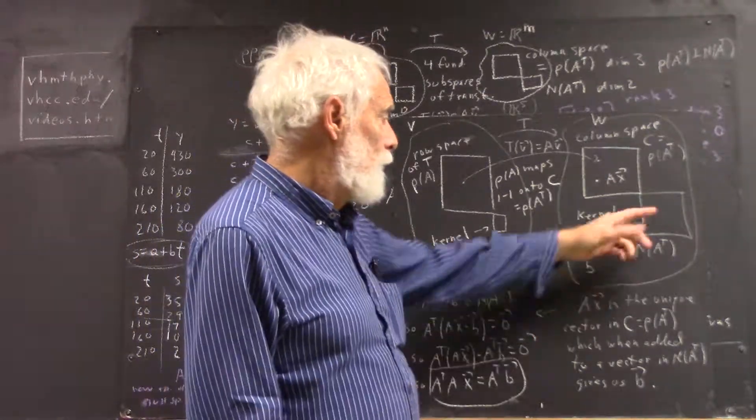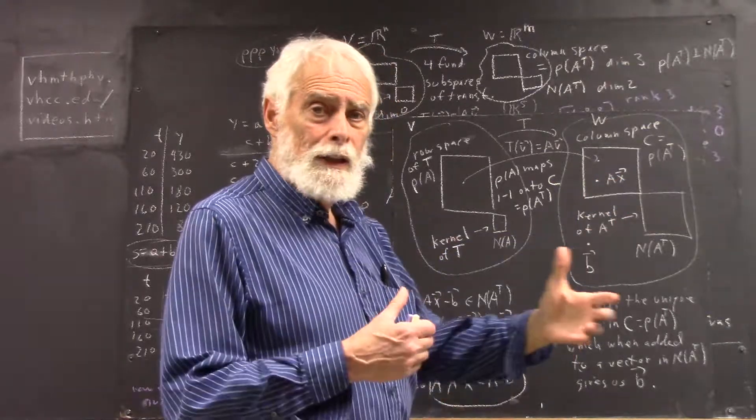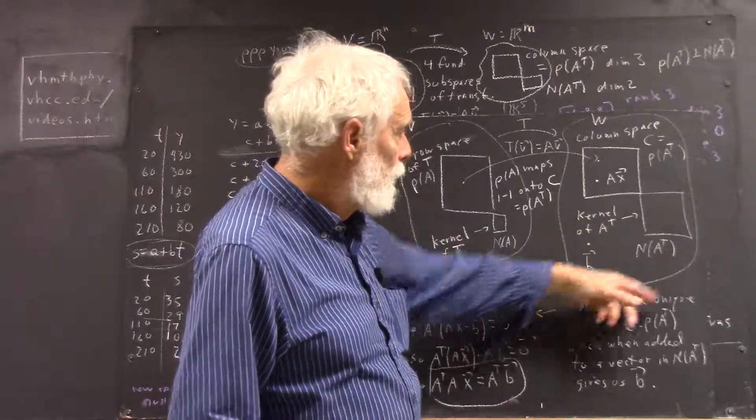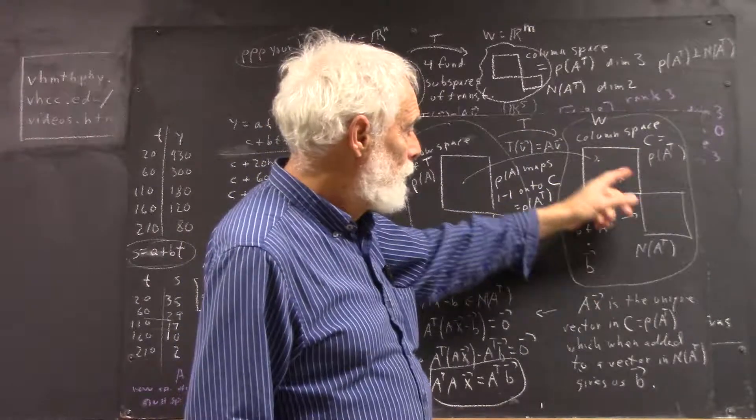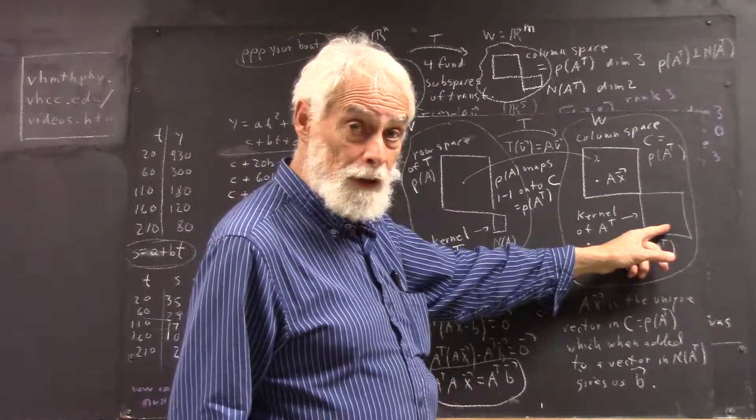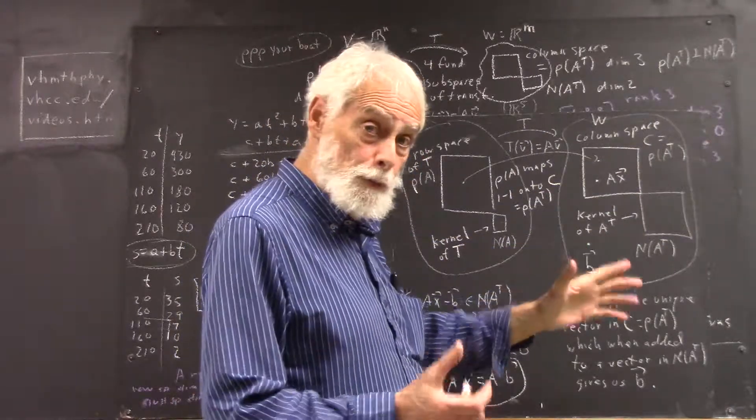And then I say again, these are orthogonal complements and they add up to the whole space. That is, every vector in the whole space is a sum of one of these and one of these. And that sum is unique. These are very important properties.